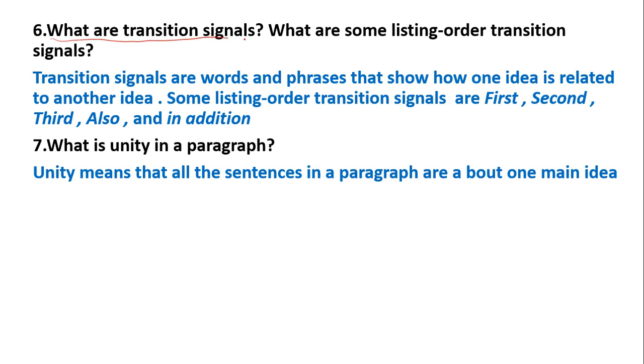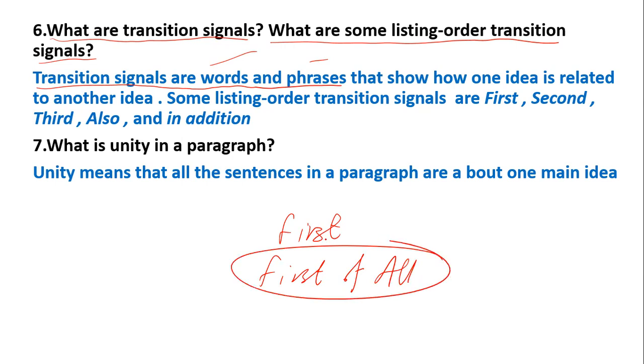Number six. What are transition signals? What are some listing order transition signals? Transition signals are words or phrases that show how one idea is related to another. Some listing order transition signals are first, second, third, also, and in addition.